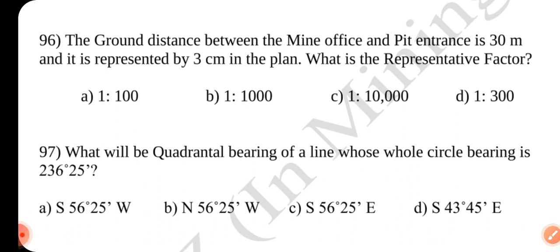Question number 96. The ground distance between the mine's office and pit entrance is 30 meter and it is represented by 3 cm in the plant. What is the representative factor? Answer is B 1 is to 1000.